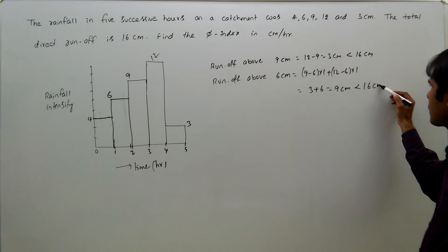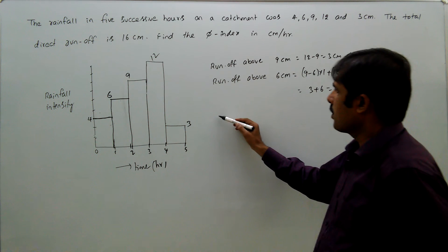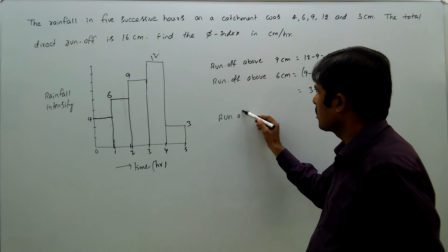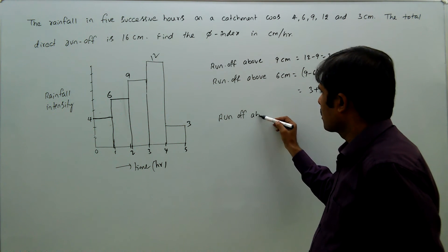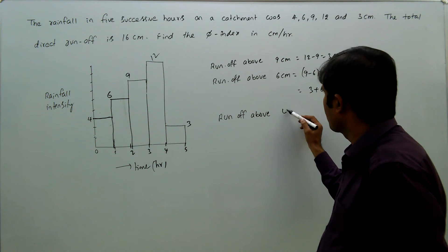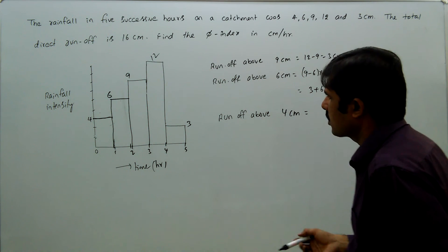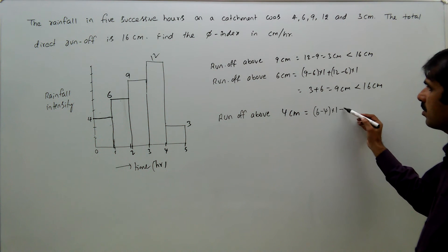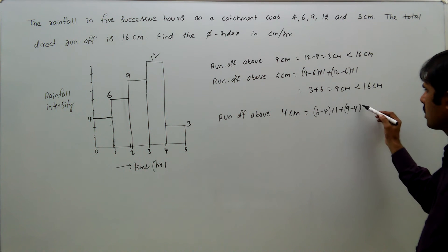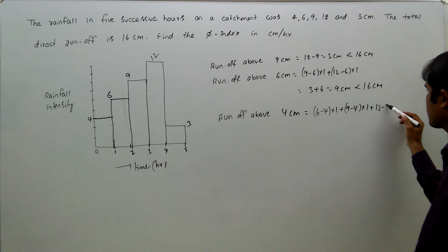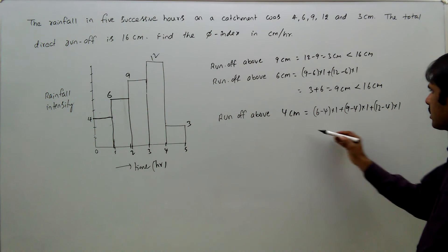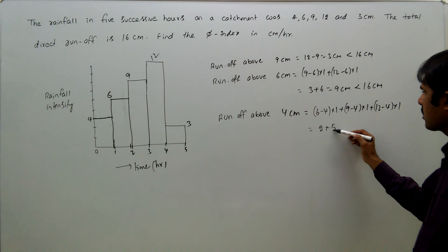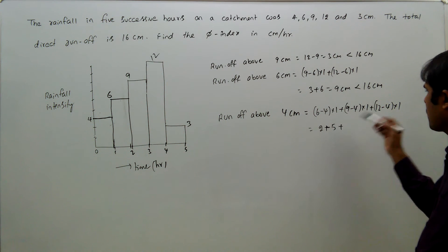Still less than 16 cm. Runoff above 4 centimeter level, that equals 6 minus 4 into 1, plus 9 minus 4 into 1, plus 12 minus 4 into 1. That equals 2 plus 5 plus 8, that is 15 centimeter. Again it is less than 16 centimeter.